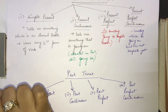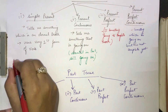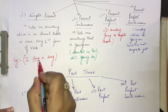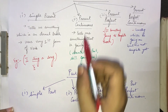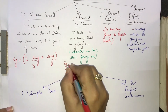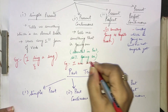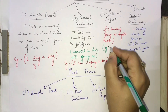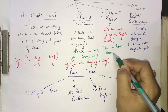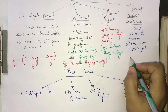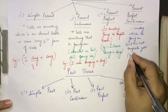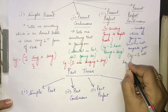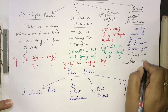Let us take examples. The very first example for simple present is: I sing a song — this is V1 form. Present continuous: I am singing a song. Present perfect: I have sung a song. And present perfect continuous: I will have been singing a song.